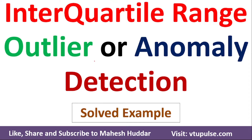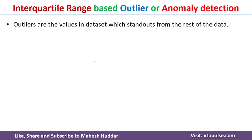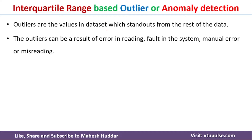Welcome back. In this video I will discuss how to detect outliers or anomalies in a given dataset using the interquartile range based method. Before we proceed, we will first understand what outliers are. Outliers are values in the dataset which stand out from the rest of the data. Outliers occur in a dataset because of different reasons: error in reading the data, fault in the given system, manual error, or misreading.